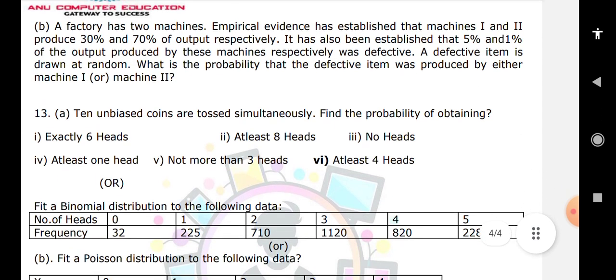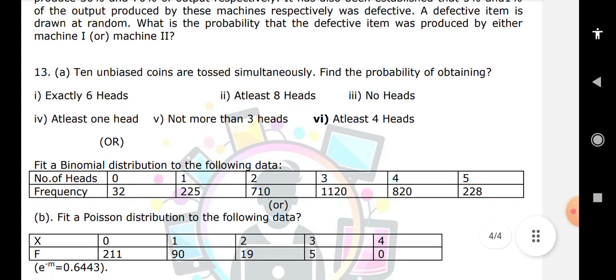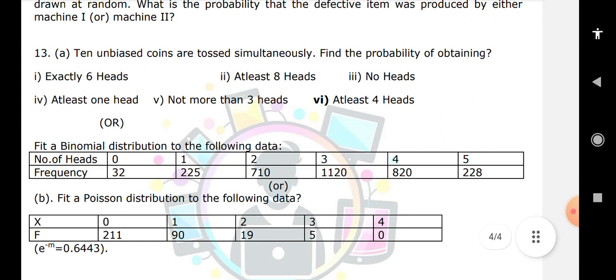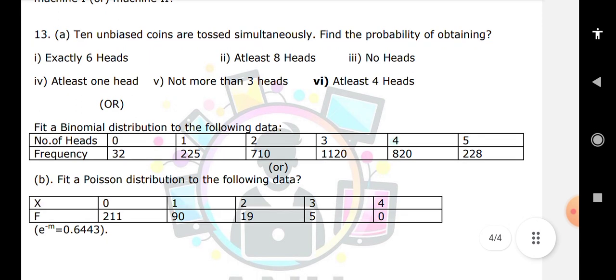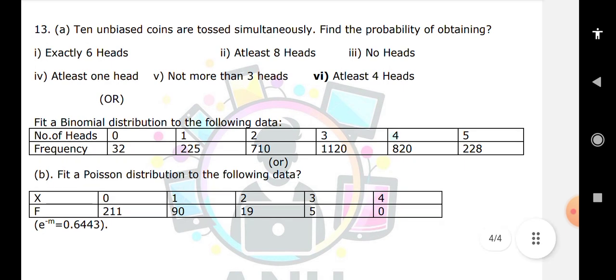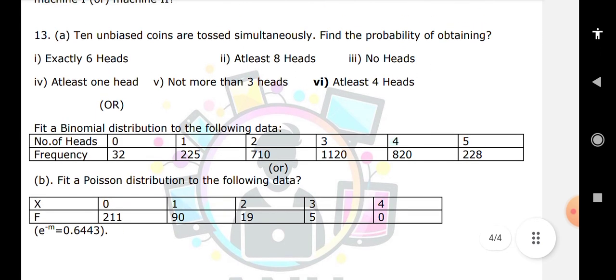Ten unbiased coins are tossed: exactly 6 heads, at least 8 heads. Next, binomial distribution frequencies - this is the problem. Theory questions - if you need to find your own questions, you can see them. Next is Poisson distribution. Just 3 problems you will be able to find. So 100% will be able to find them.